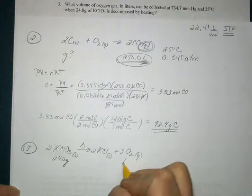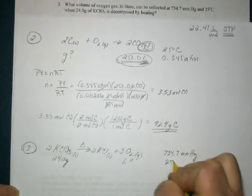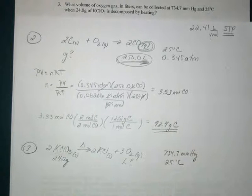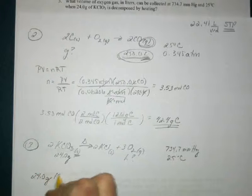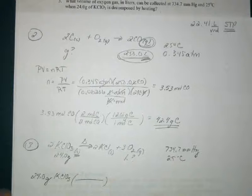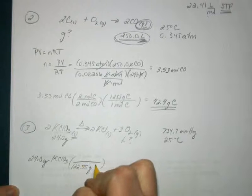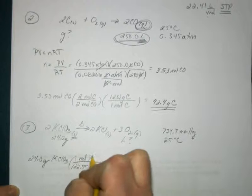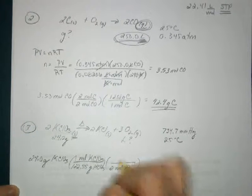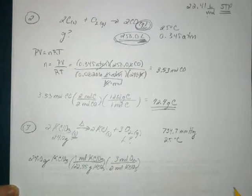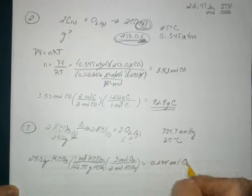I am asked for the volume of oxygen in liters that is collected at 734.7 millimeters of mercury and 25 Celsius. I'm beginning with the solid, so no gas law for this yet. I'm going to start out with my 24 grams of potassium chlorate and convert to moles using formula mass: 122.55 grams of KClO₃ in every one mole. Now to my mole ratio: two moles of KClO₃ for every three moles of O₂. I'm not at STP, so I'll stop here — I get 0.294 moles of oxygen.